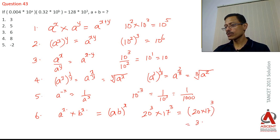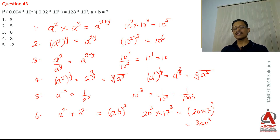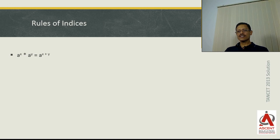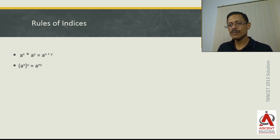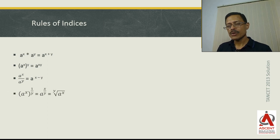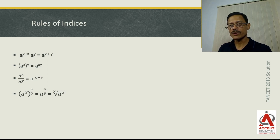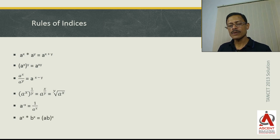Let me quickly consolidate all these rules. Rules of indices: a^x × a^y = a^(x+y); (a^x)^y = a^(xy); a^x ÷ a^y = a^(x−y); a^x raised to the power of 1/y = a^(x/y), which is the y-th root of a^x; a^(−x) = 1/a^x; and a^x × b^x = (ab)^x.